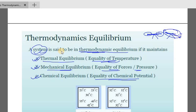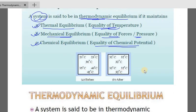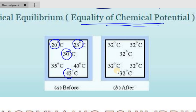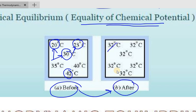Chemical equilibrium means equality of chemical potential. Looking at temperature levels — 20 degrees, 23 degrees, 30 degrees — we are looking at temperature. If we are working on a process, everywhere the temperature is equalizing.